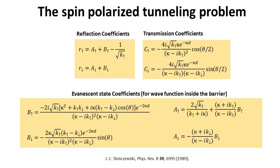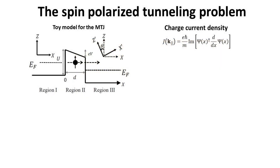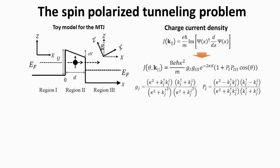We can now compute the total tunneling current across the magnetic tunnel junction. The current density is computed from the standard quantum mechanical expression, where its dependence on the transmitted wave function is made explicit. Substituting the final form of the transmitted wave function, we obtain a result where coefficients G1 and G3 depend on the wave vectors of electron states in both ferromagnetic contacts as well as the magnitude of the complex wave vector in the tunneling barrier. All angular dependence in the final current density is confined to a single cosine factor, multiplied by the tunneling spin polarizations P1 and P3 of ferromagnetic electrodes in regions 1 and 3.